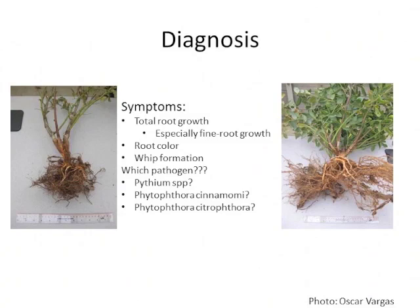Next you get out the shovel and start digging. A healthy plant has very light-colored roots with many fine fibrous roots. The infected plant has very dark roots and not very many fine roots. Another prominent feature is the abundance of whips — whips are regenerative basal shoots on blueberries. We have lots of whip formation on the healthy plant and really no new regenerative growth on the infected plant.